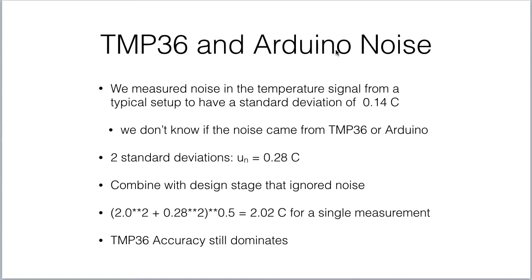There's still some more noise out there. We measured noise in the temperature signal from a typical setup and found a standard deviation of around 0.14°C. If we want a higher-order estimate of our uncertainty, we need to include that noise. So we take two standard deviations of that noise — 0.28°C — and combine it with our design stage uncertainty that ignored noise. Combining them, we're still only a little over 2°C for a single measurement. The biggest source of uncertainty in a TMP36 measurement is the manufacturing variation in individual sensors, which dominates unless we calibrate the TMP36.